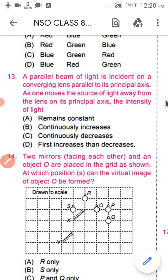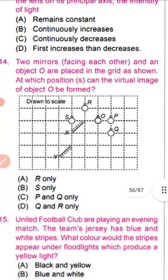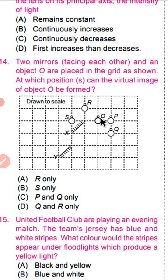Now come to question number 14. Two mirrors facing one another and an object O are placed. At which position S can a virtual image of object O be formed? Option A is R only, option B is S only, option C is P and Q only, option D is Q and R only. Option number D is the correct option.